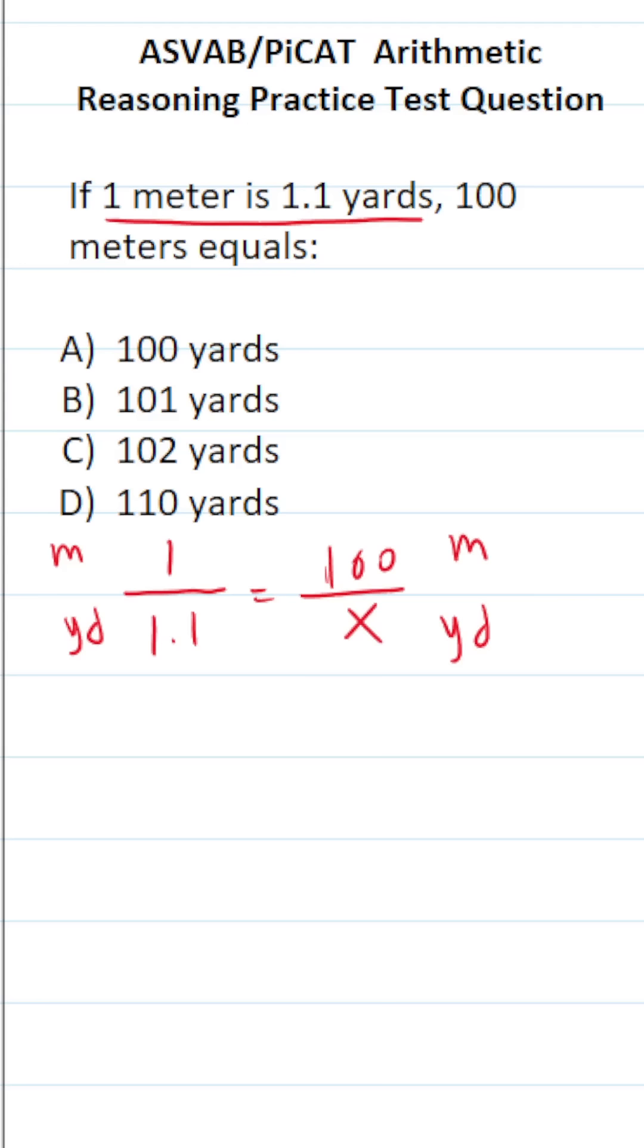You solve proportions via cross multiplication. 1 times X is just X equals 1.1 times 100.